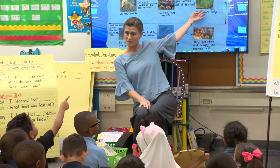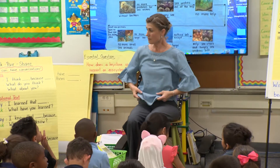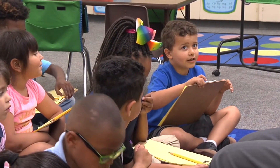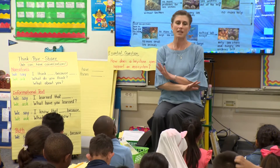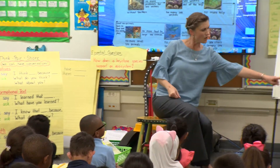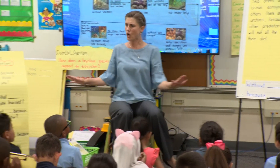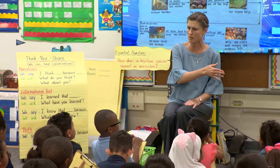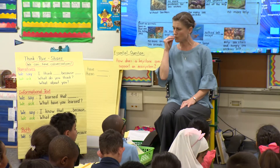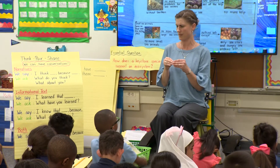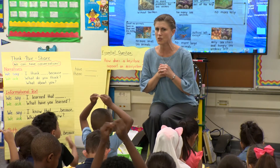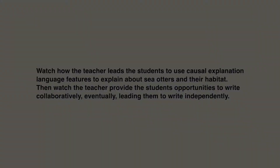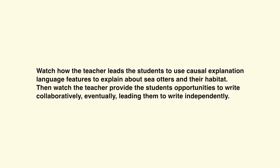They eat kelp, and sometimes they lay their eggs there. So without the kelp, they would be gone. So should we write: 'Without kelp, there are no more small sea animals because they have no more food'? Show me if you agree or disagree. Thank you, Charlton — you are agreeing. Thank you, Jayden — and I see you agreeing. Watch how the teacher leads the students to use causal explanation language features to explain about sea otters and their habitat.